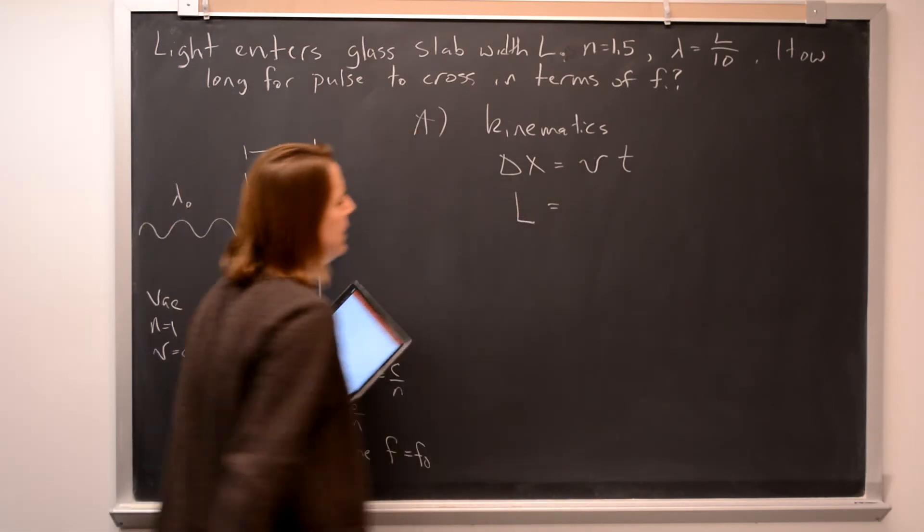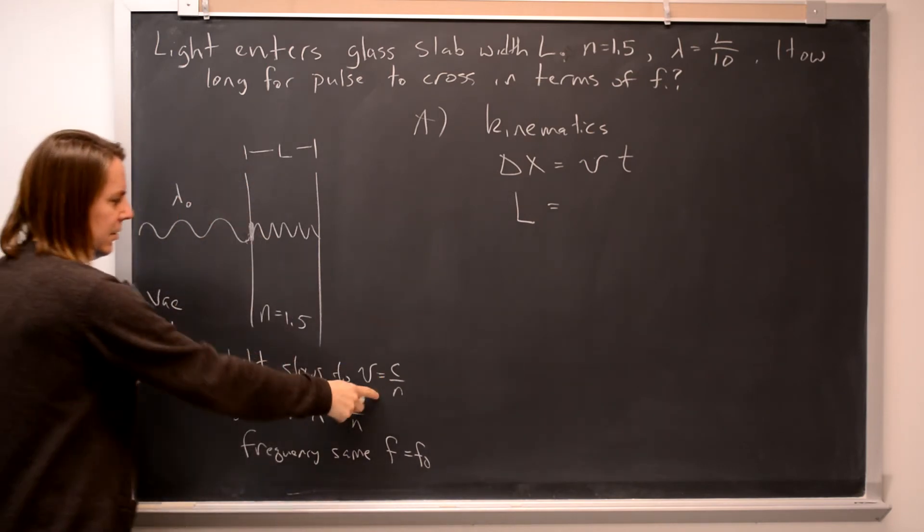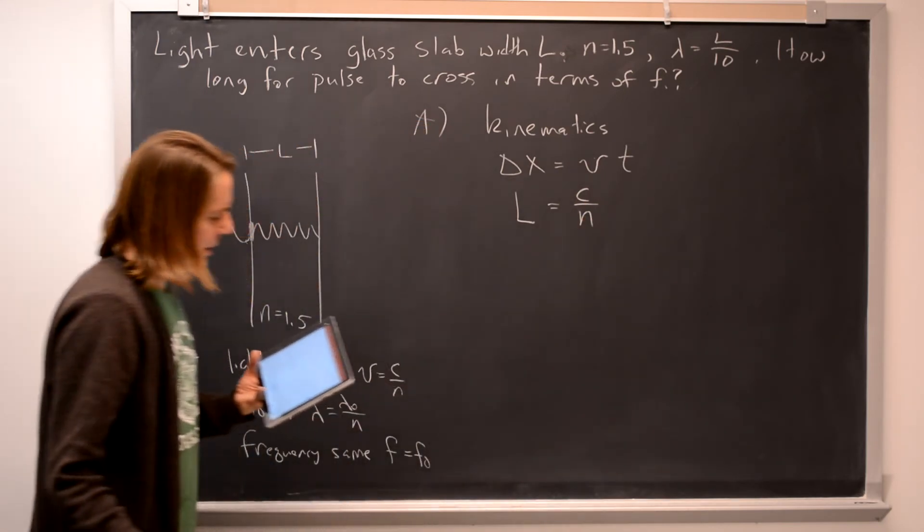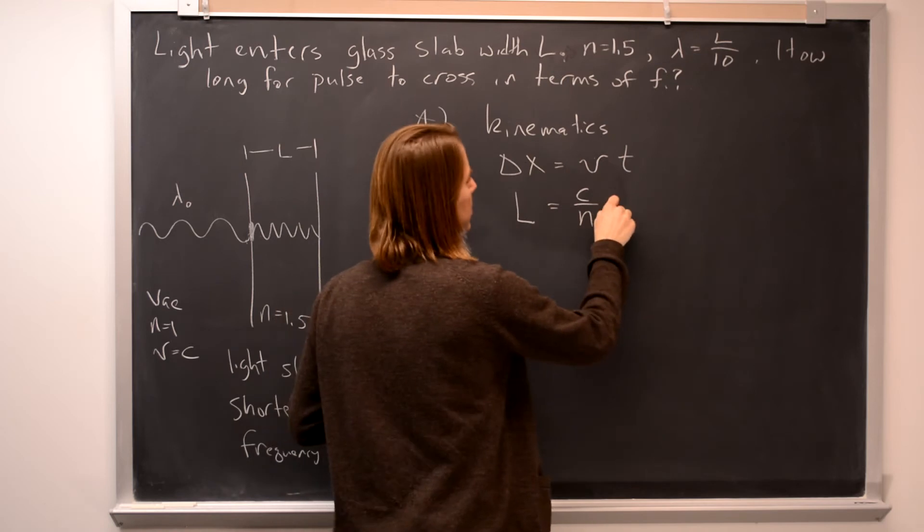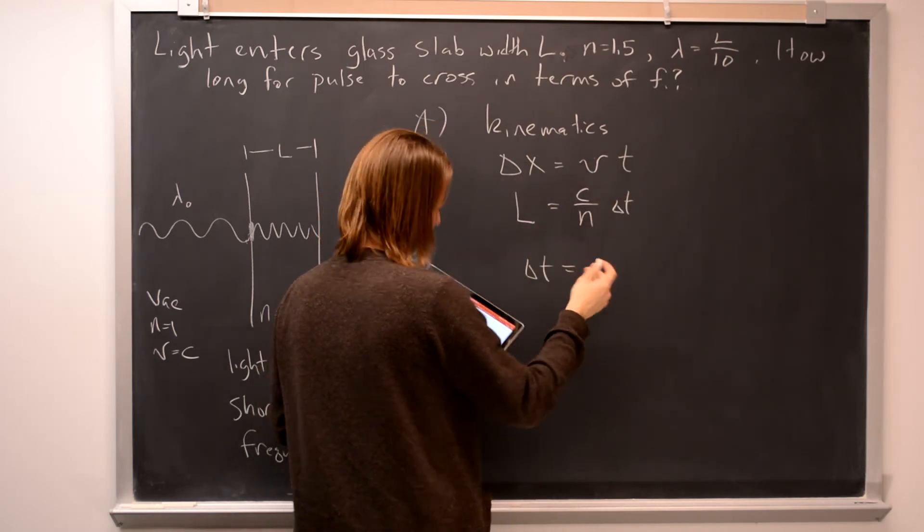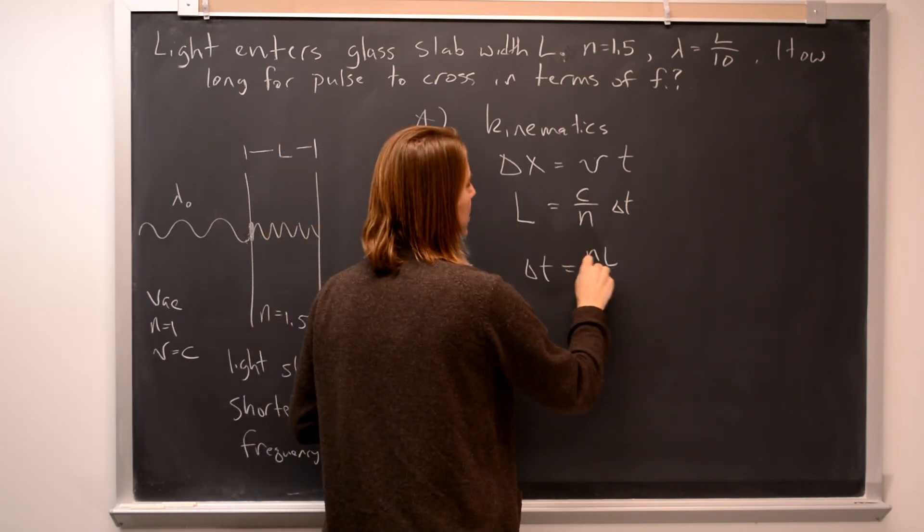The distance it went was L, and the speed is C over N, or that speed of light over that 1.5. And in time is the delta T you want. So you just solve this for delta T, and you get N you were given, that's 1.5, N L over C.